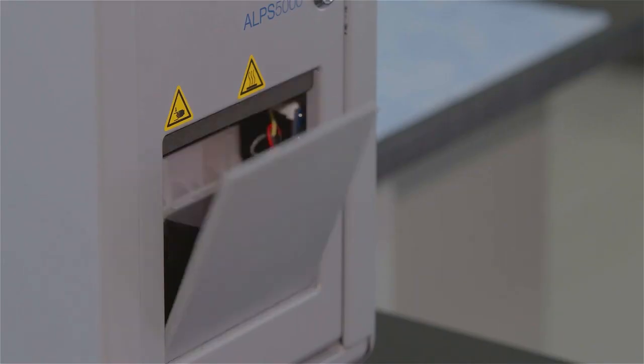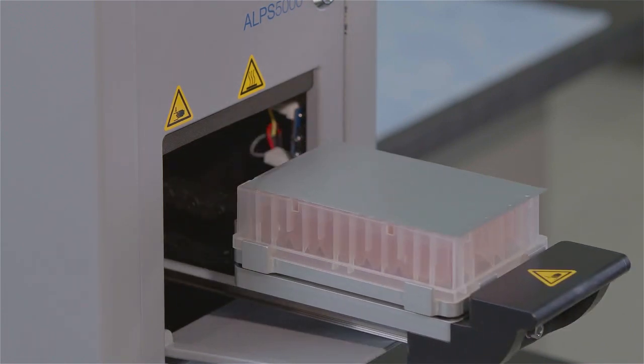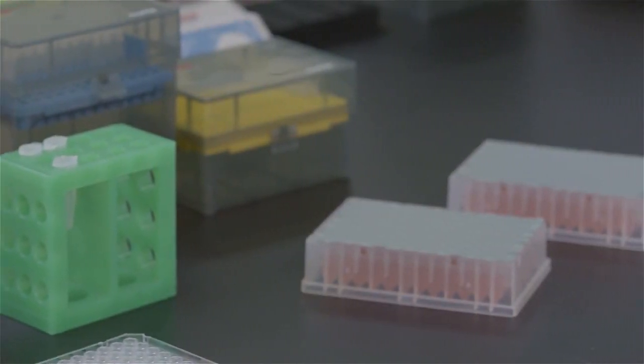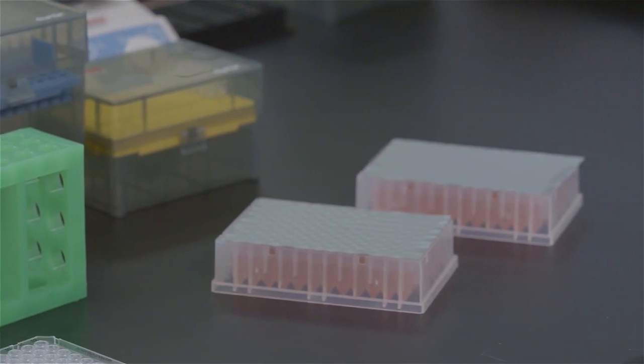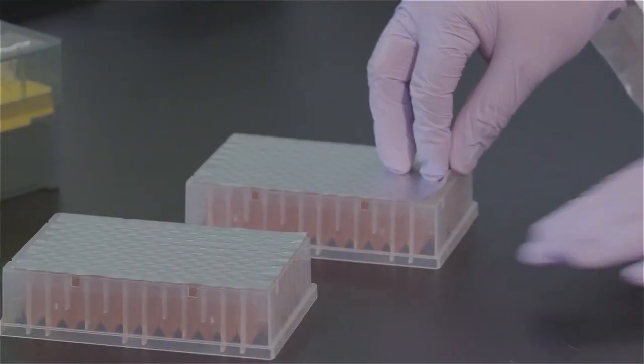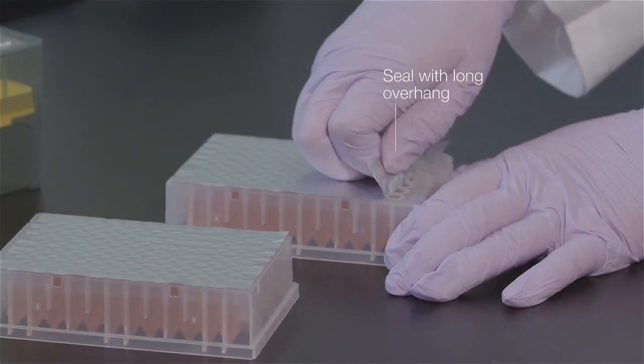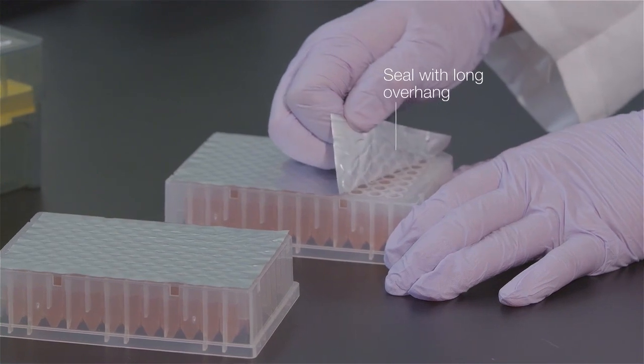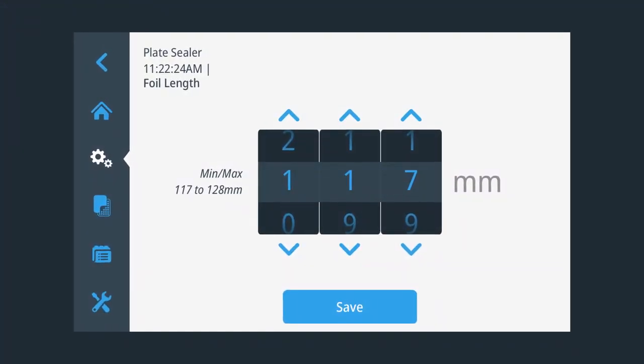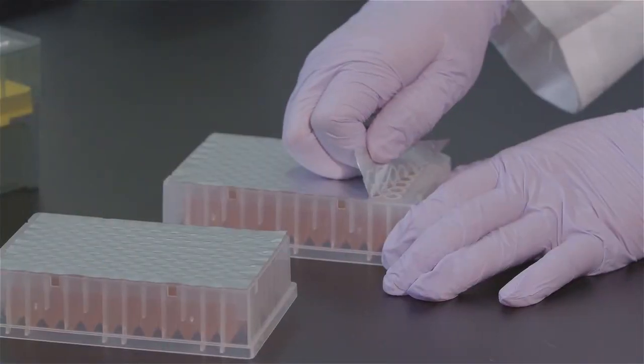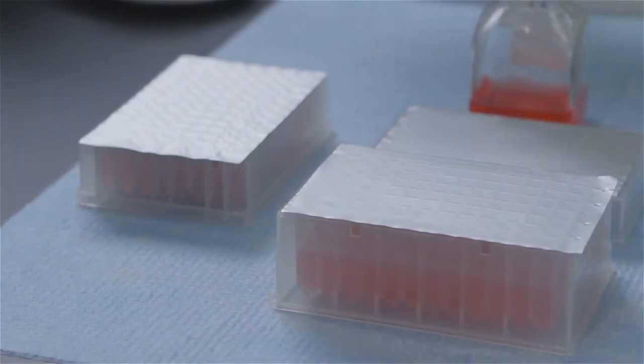You can set the length the ALPS 5000 automated plate sealer will cut the seal to. For example, you can make it longer to create more overhang, making the foil easier to peel off. You can also program the unit to cut the seal with no overhang. This helps to avoid inadvertent peeling and keeps the plate neater for storage.